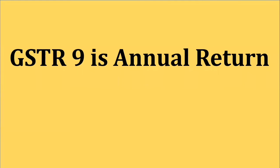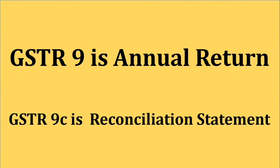सबसे पहले हम GSTR 1 file करते हैं। GSTR 1 के अंदर B2B और B2C दोनों का sales जो होता है, वो हम GSTR 3B के अंदर भी file करते हैं — same figure होता है। लेकिन कभी-कभी दोनों में कुछ variance आ जाता है। तो GSTR 9 एक annual return है जो GSTR 1 और GSTR 3B के figures को match करने के लिए होता है, और GSTR 9C एक reconciliation statement है। GSTR 9 file होने के बाद GSTR 9C file होता है।